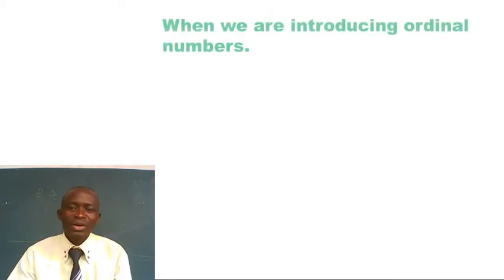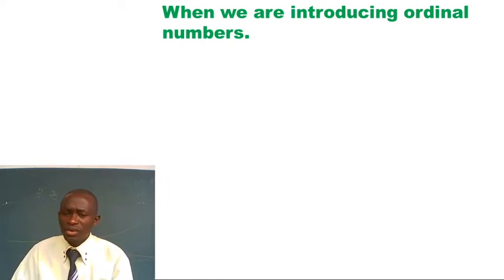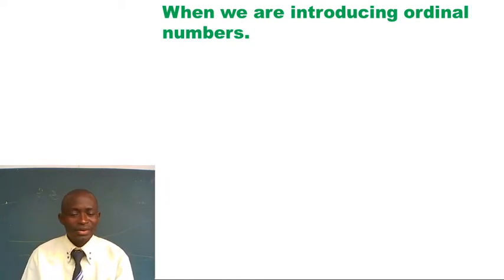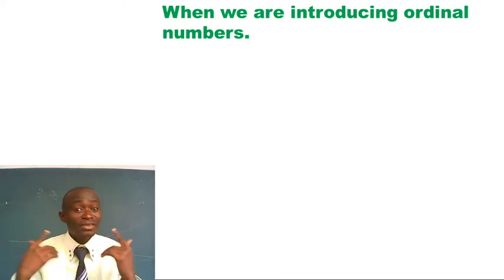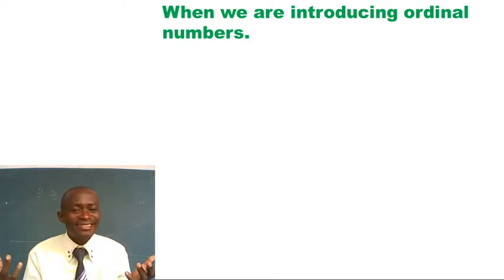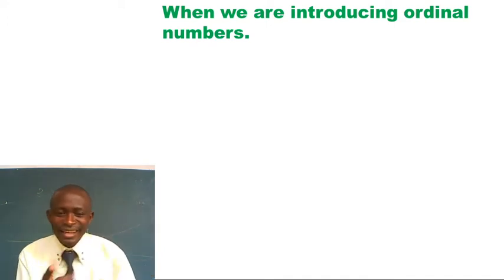We want to look at the next way of using article THE — when we are introducing ordinal numbers. Ordinal numbers are things like: first, second, third, fourth, fifth. I can say: 'I was the first in class,' or 'You were the last in class.'